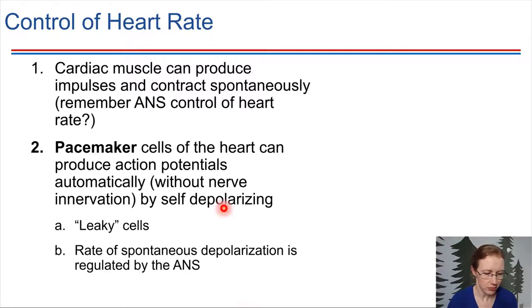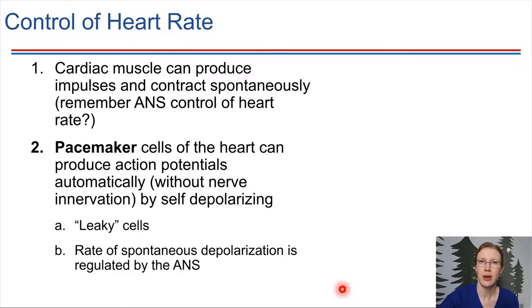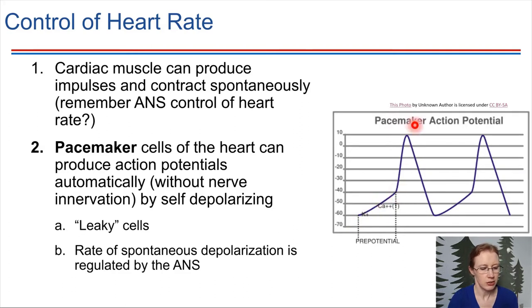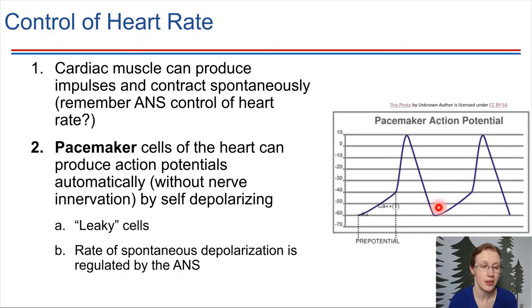What pacemaker cells do is they have leaky membranes. If we let these cells do what they do naturally, ions will leak across the plasma membrane, leading to depolarization, which eventually initiates an action potential. When we look at what the heart does, there's what's called a pre-potential, due to the leaky membranes. Once that depolarization reaches threshold, the rest of the action potential takes off and the heart contracts. We'll see pacemaker cells in more detail in chapter 13.